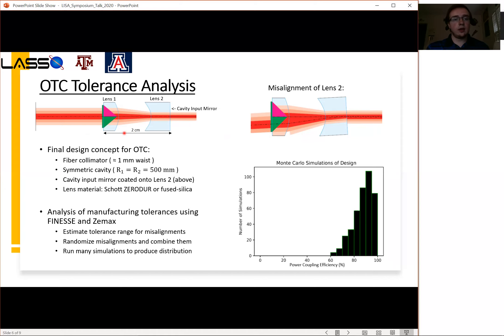This brought us to a final design concept for the OTC, which is shown right here. Another idea that we wanted to implement is coating the cavity input mirror onto the back of lens two, and this essentially decreases the degrees of freedom that we have in the system. It is one less optical component to align.